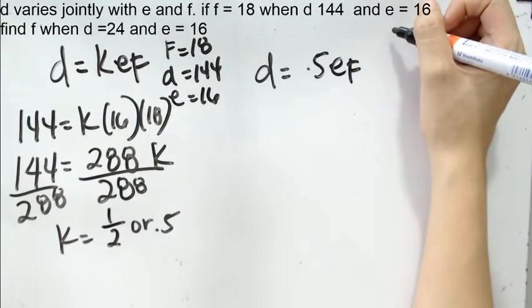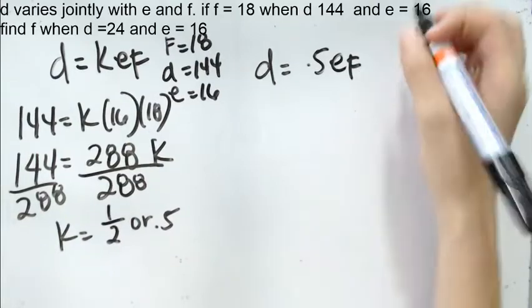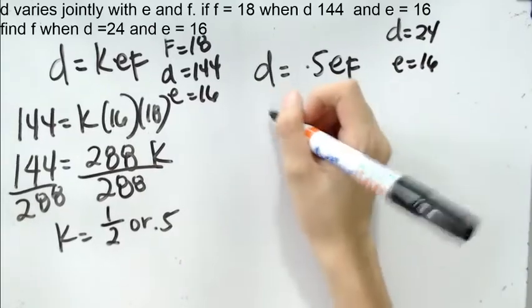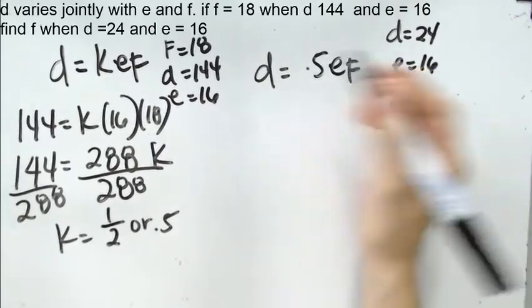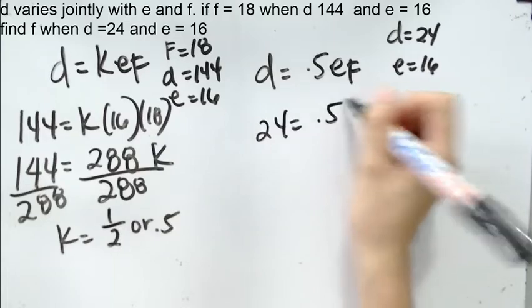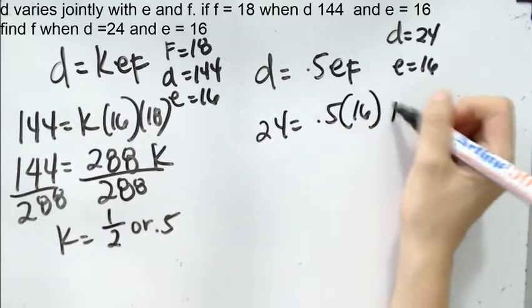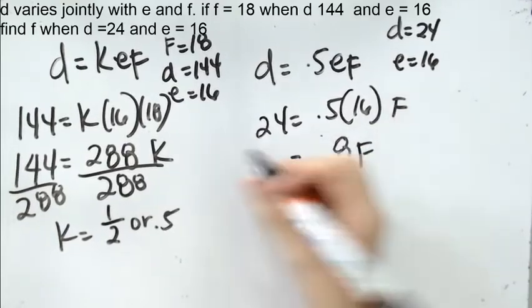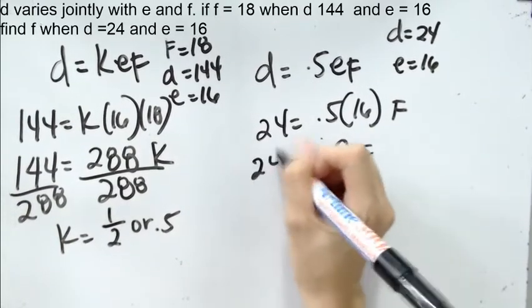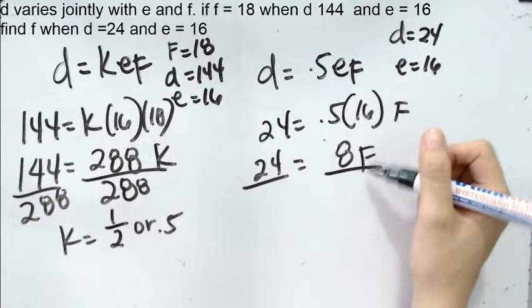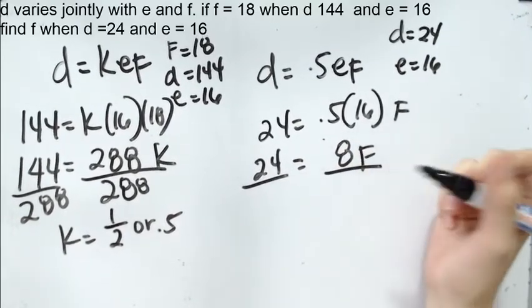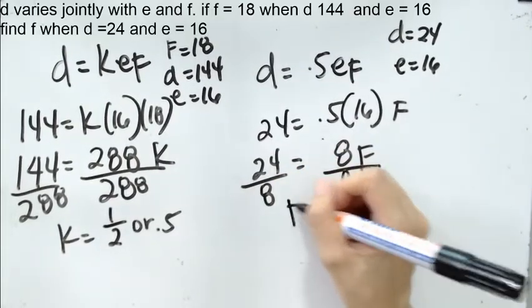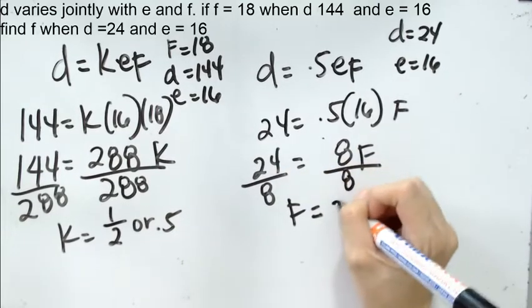For the second statement, we need to find F when D is 24 and E is 16. So we just need to substitute. 24 equals 0.5 times 16 times F. 0.5 times 16 will give you 8, multiplied by F. We have 8F equals 24. To find the value of F, we need to divide both sides by 8 so that we can isolate F. And 24 divided by 8 equals 3.